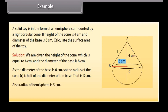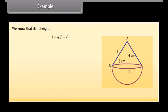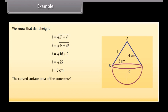Also, radius of the hemisphere is 3 cm. To find the surface area of the toy, we need the curved surface area of the cone, which is π·R·L. We find the slant height L = √(H² + R²) = √(4² + 3²) = √(16 + 9) = √25 = 5 cm. Substituting the values: curved surface area of cone = 3.14 × 3 × 5 = 47.1 cm².